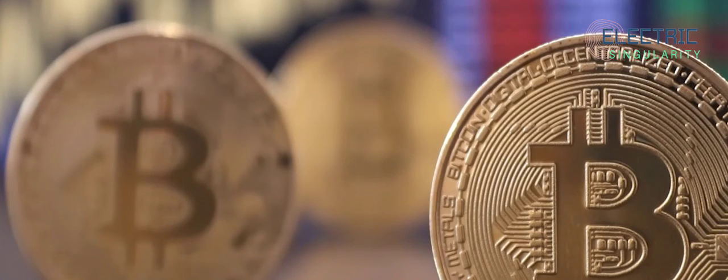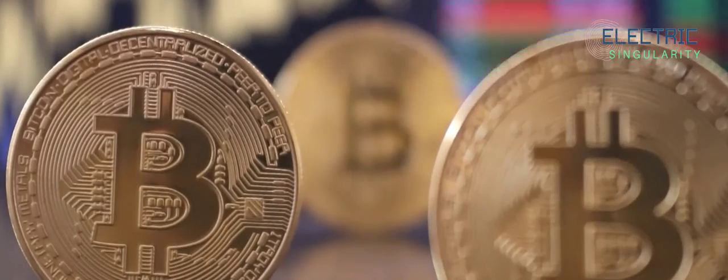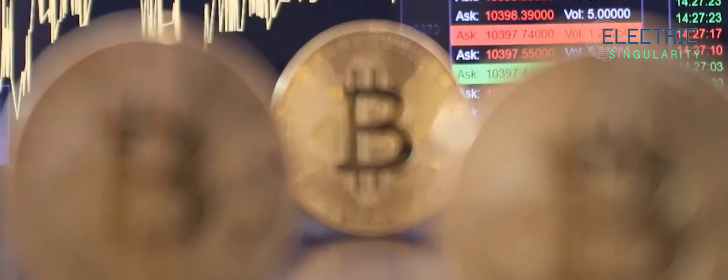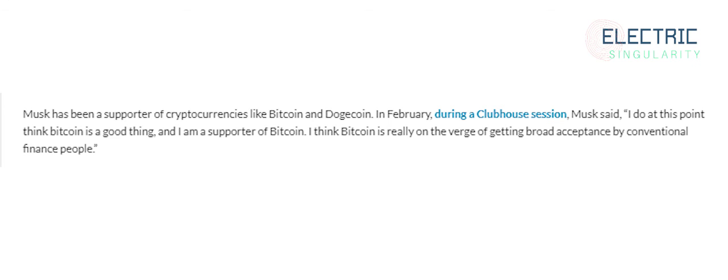Musk has been a supporter of cryptocurrencies like Bitcoin and Dogecoin. In February, during a clubhouse session, Musk said, I do at this point think Bitcoin is a good thing and I am a supporter of Bitcoin. I think Bitcoin is really on the verge of getting broad acceptance by conventional finance people.